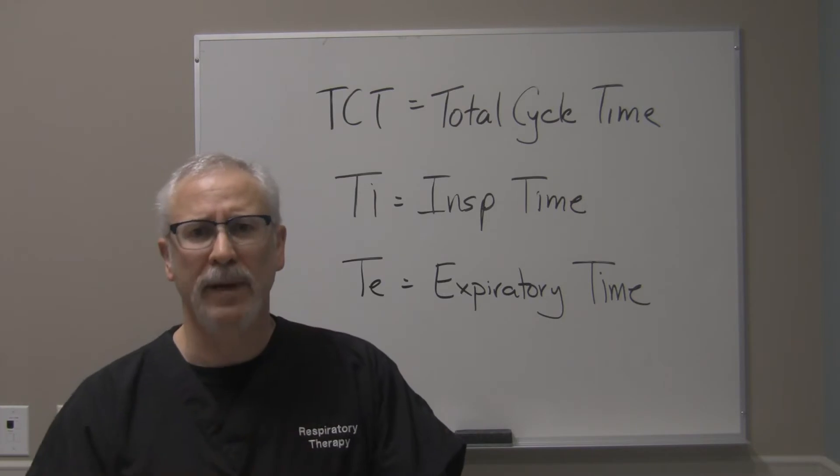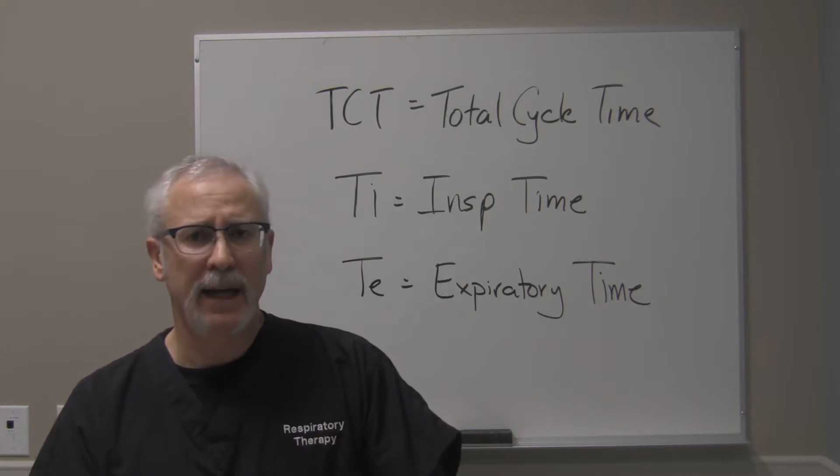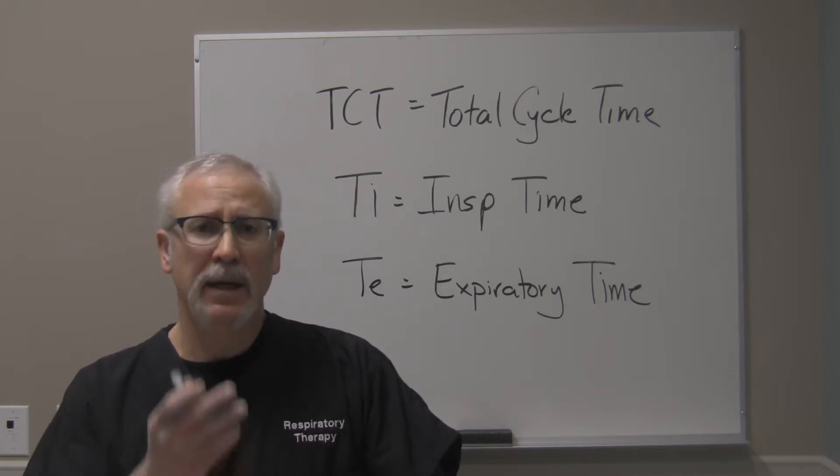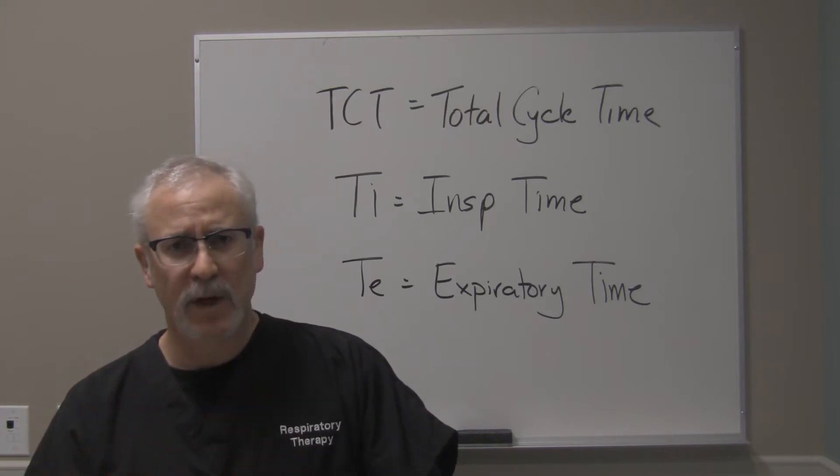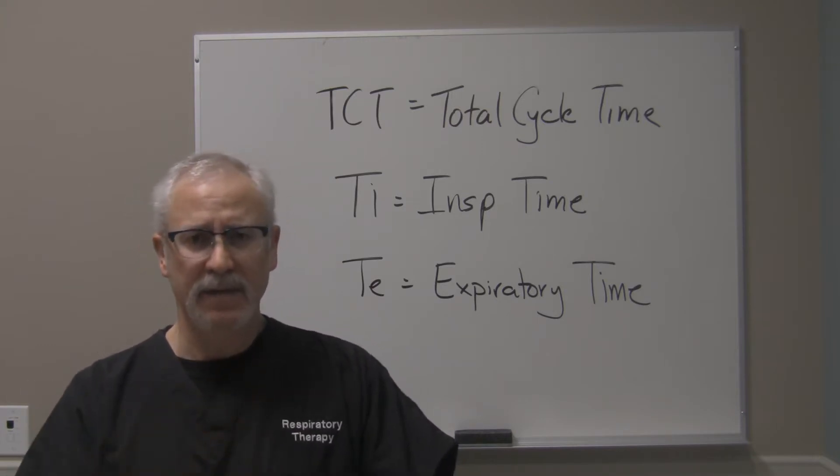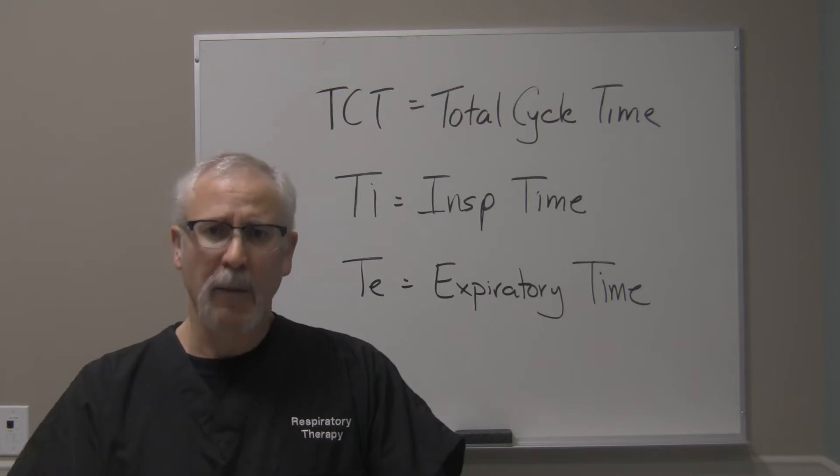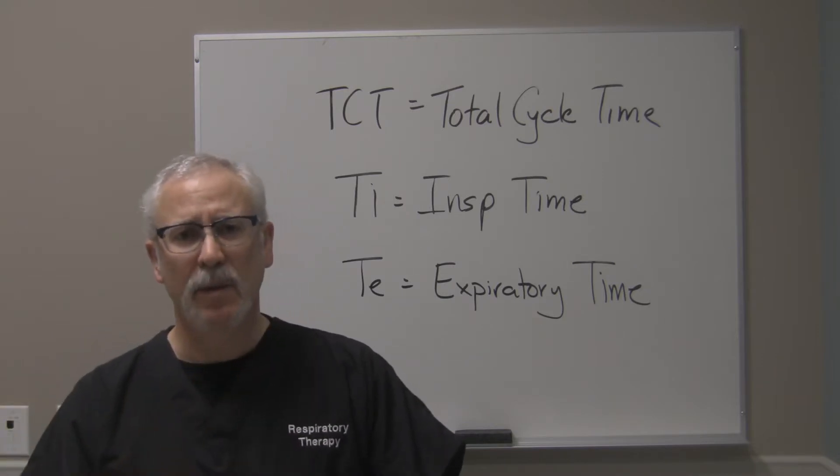And as you can see on the board behind me, total cycle time is abbreviated TCT, inspiratory time is abbreviated TI, and expiratory time is abbreviated TE. So TI, time for inspiration, TE, the time that it takes for exhalation. And what we're going to talk about is the dynamics or the relationship of all these values together.